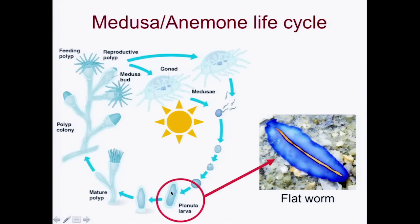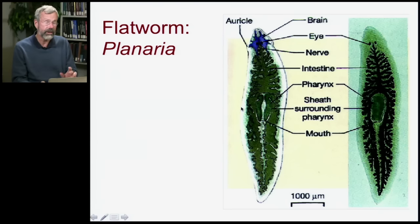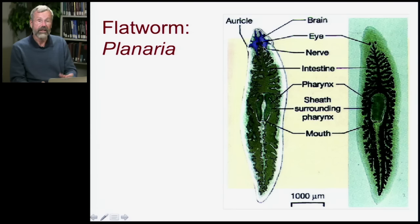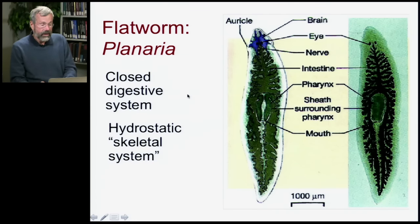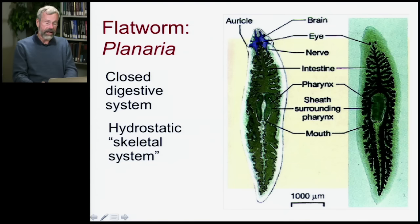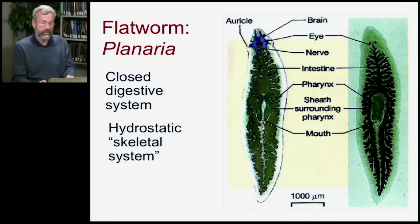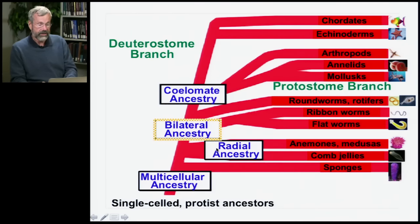Flatworms are bilaterally symmetric, the same on the left as on the right. Some of these organisms are quite remarkably evolved — they have a brain, they have eyes, they have nerves. Jellyfish don't have eyes; sponges and jellyfish don't have brains. So flatworms are the first things we see with a nervous system. They also have a closed digestive system — food comes in through the mouth, is digested, and is pooped back out through the mouth. And like a jellyfish, they still have a hydrostatic skeletal system.